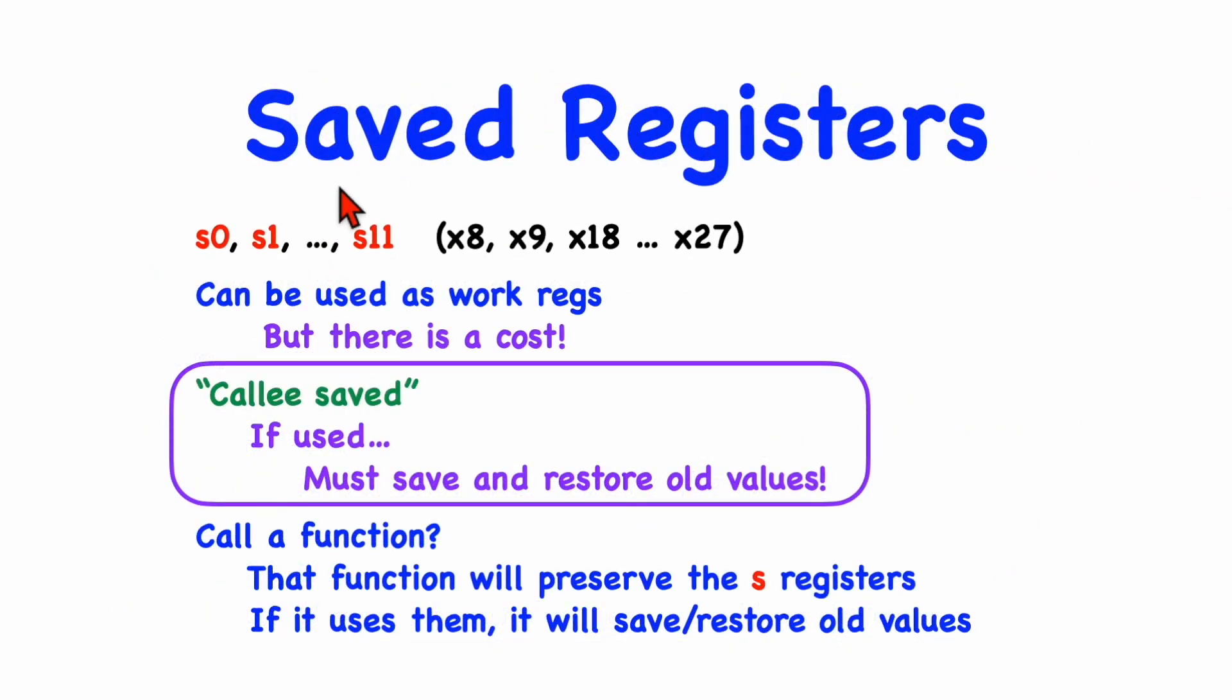There's also another group of registers called the saved registers, and the saved registers have names S0 through S11. These are very similar to the temporary registers in that they can be used as just general work registers for whatever computation your function has to do. But, unlike the temporary registers, these are said to be callee saved. They're not caller saved, they're callee saved. So, there's a cost to using these registers. If they're going to be used in some function, then that function must save the previous value of the register, and then before returning, it needs to restore that old value. So the standard calling convention says that every function will preserve the values in registers S0 through S11. They are callee saved.